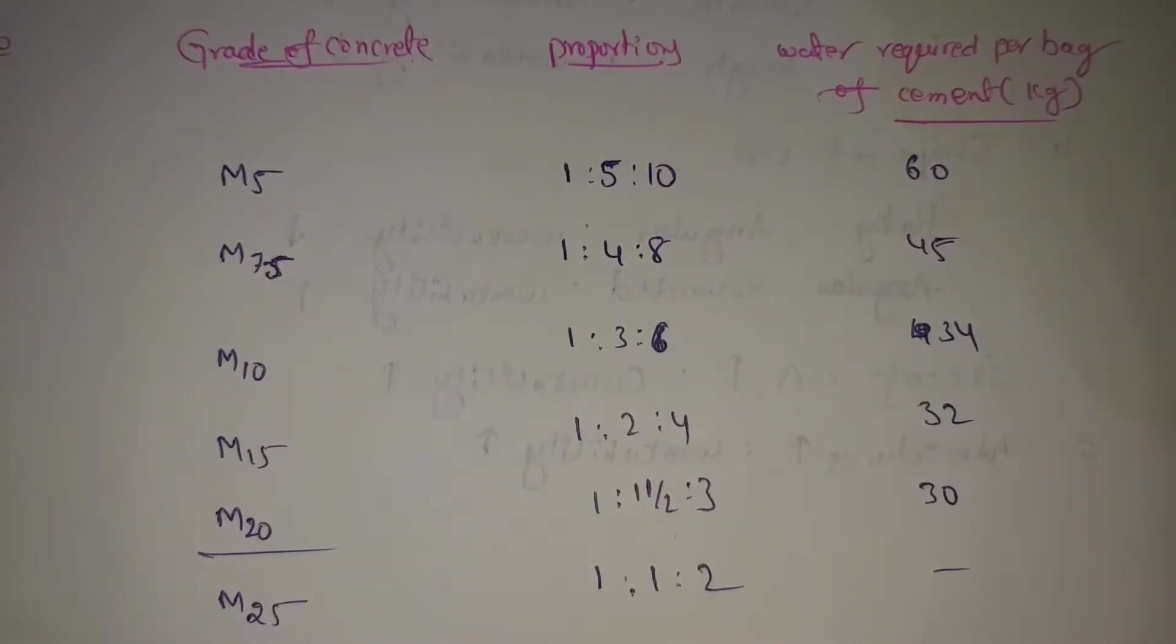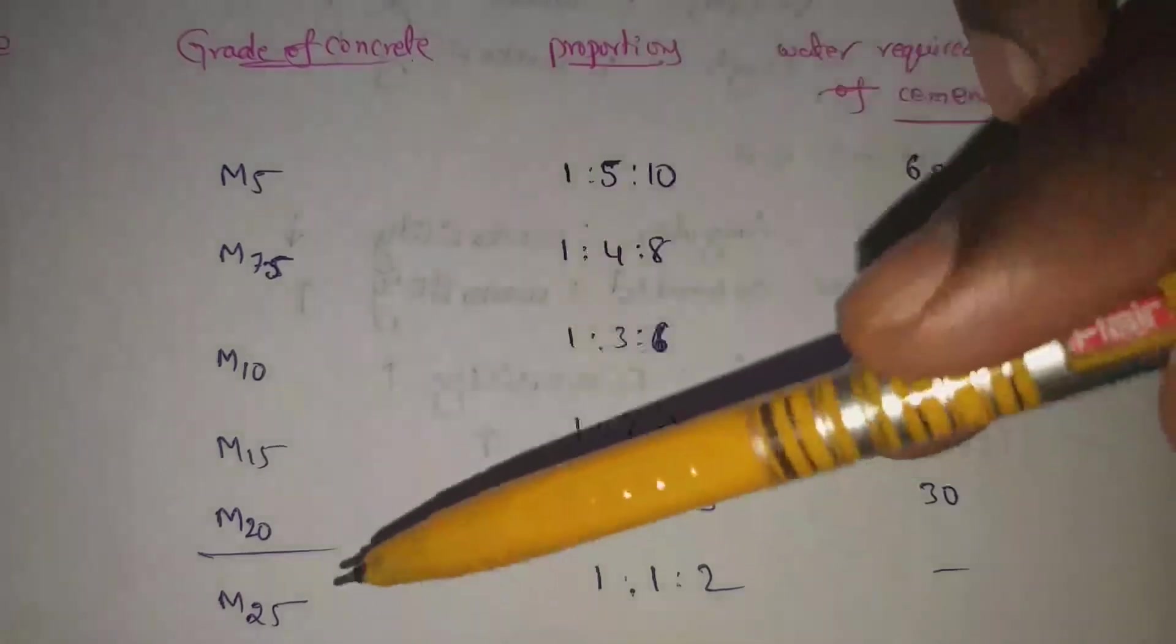We use M5 and M25. Next, we use M30, M40, M50, M60 and even high strength concrete as well. We use M25 as well.